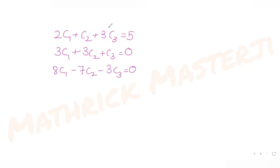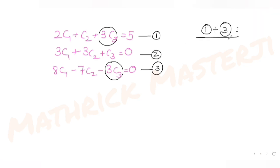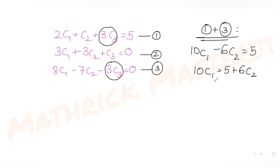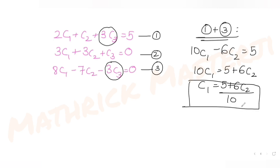Adding equations (1) and (3): since +3c3 and −3c3 cancel, we get 10c1 − 6c2 = 5, which gives c1 = (5 + 6c2) / 10. This expresses c1 in terms of c2.